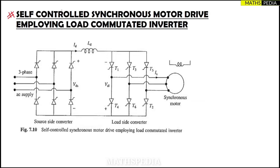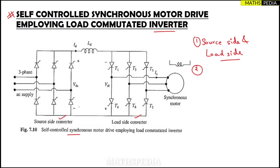In this video we are going to study the self-controlled synchronous motor drive employing load commutated inverter. Here you can see the diagram. This drive basically involves two converters: the source side and the load side. The left side is the source side converter, the right side is the load side converter. The source side is also called a six-pulse line commutated thyristor converter.